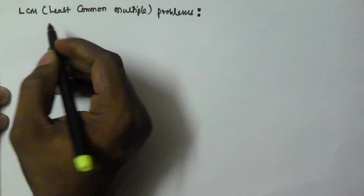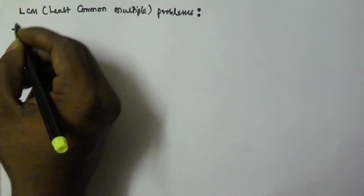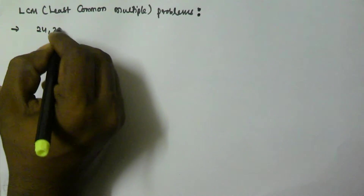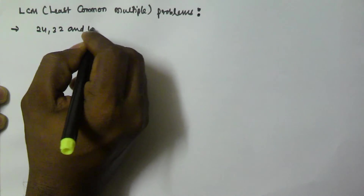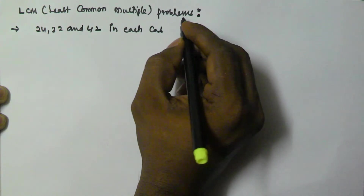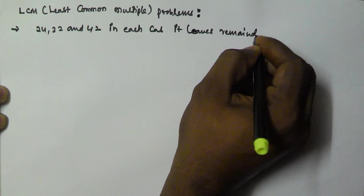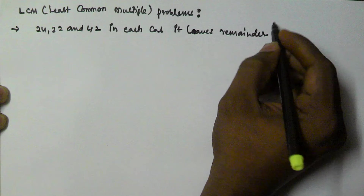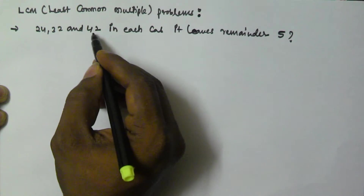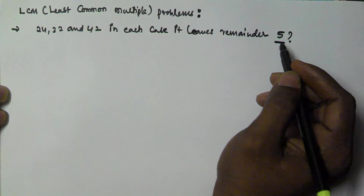In this video we will see a problem related to the LCM, that is least common multiple. The problem is: what is the least possible number which, when divided by 24, 32, and 42, in each case leaves a remainder of 5? So we have to find the least possible number when divided by 24, 32, and 42 it leaves a remainder of 5.